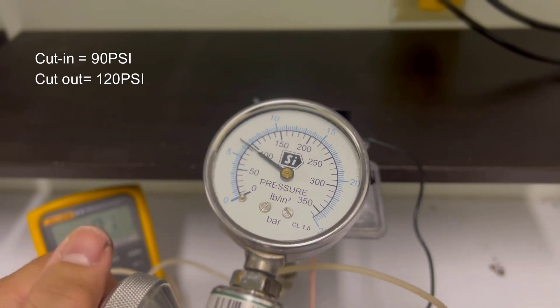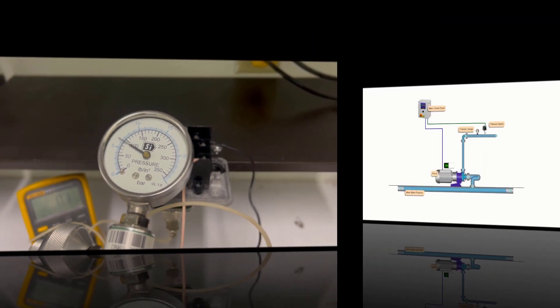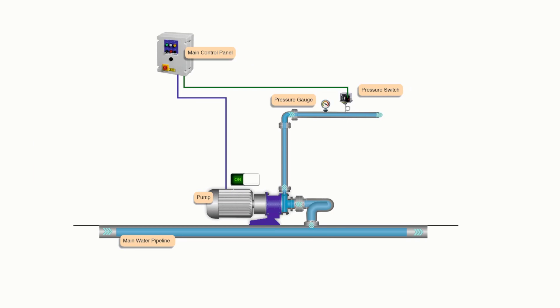The jockey pump operates on a cut-in and cut-out basis using the pressure switch to keep the fire protection system at the required pressure. It's a critical component in ensuring the safety of the building and its occupants.